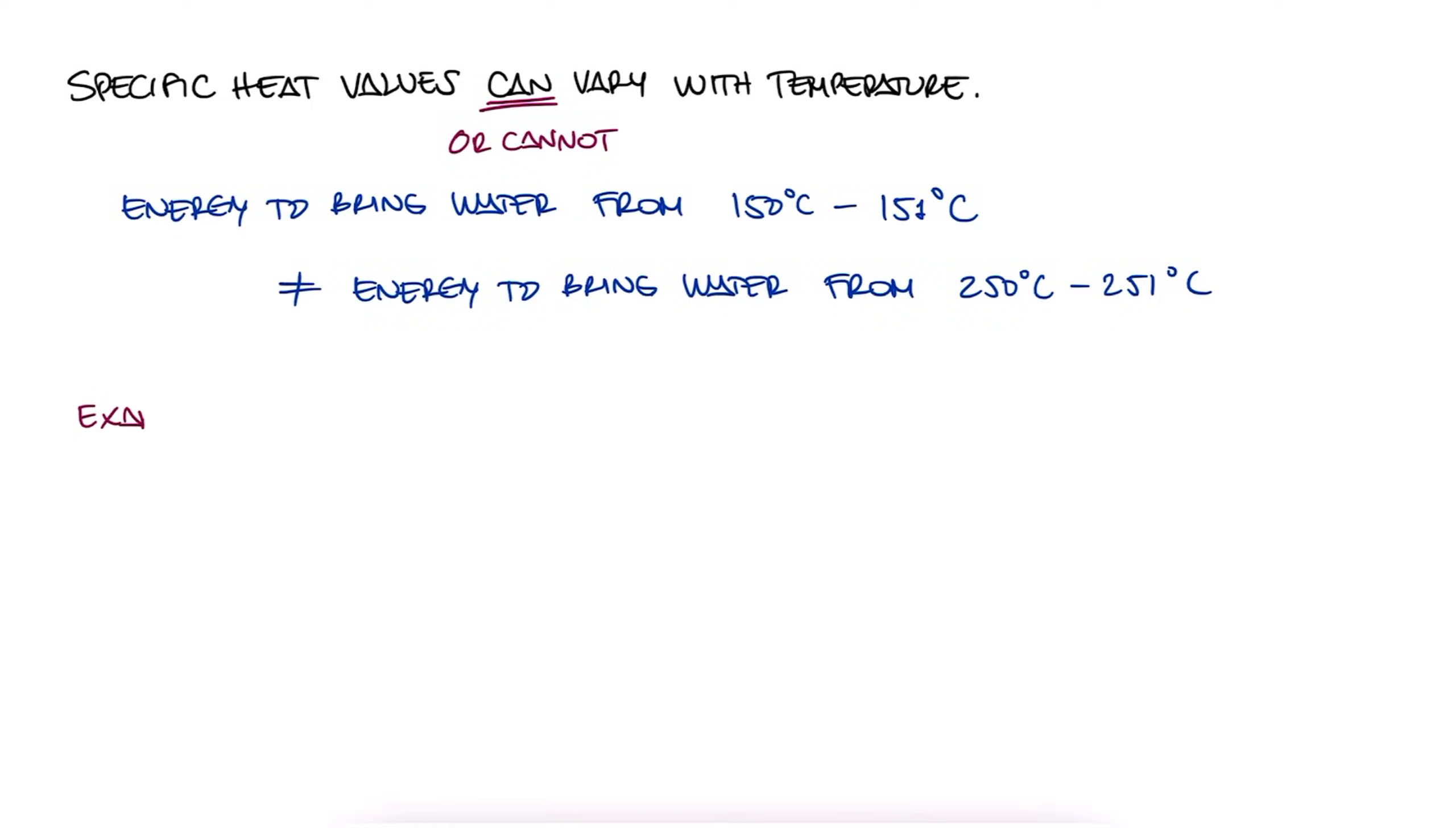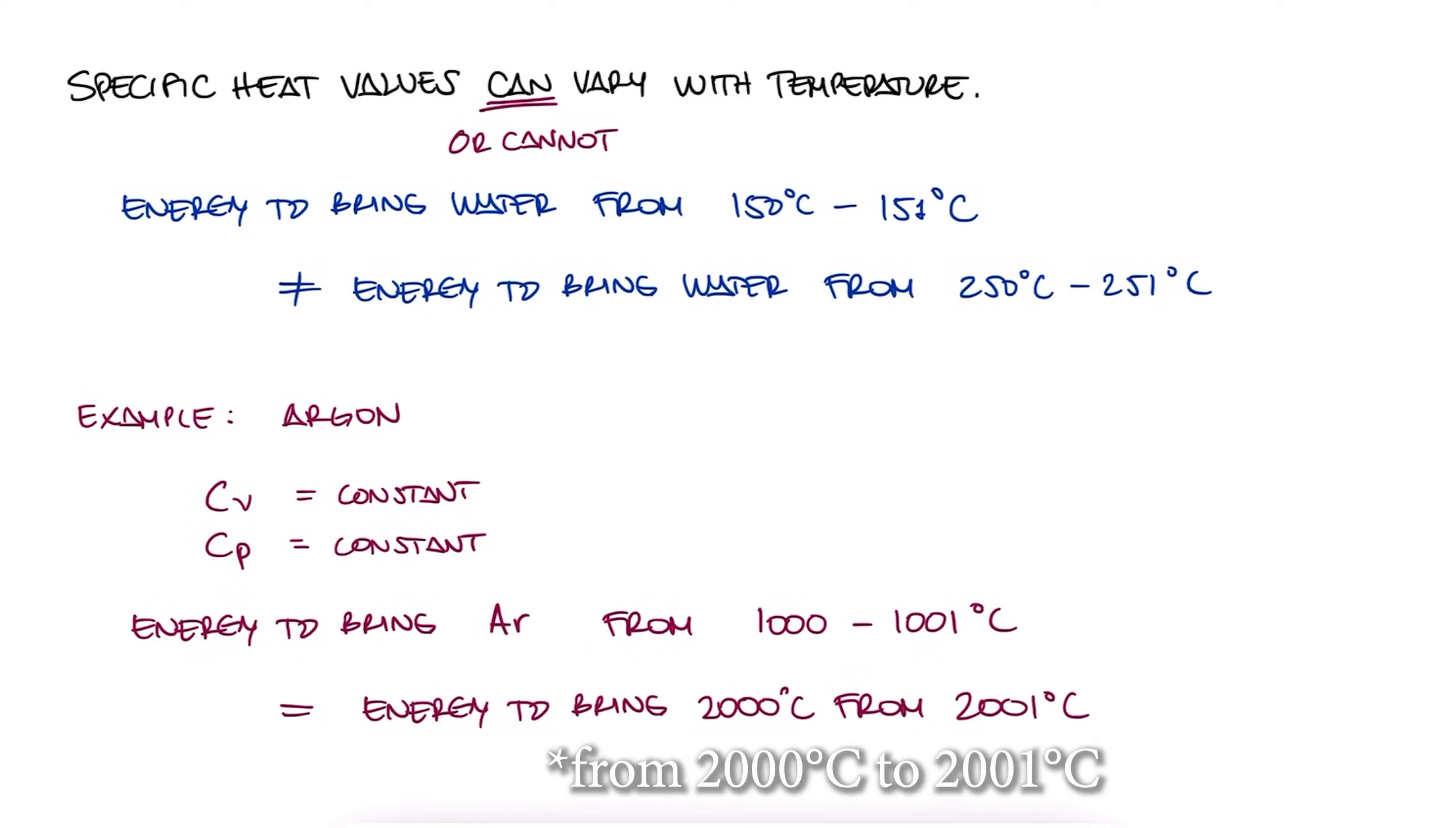For some gases like argon, the two heat capacity values are constant. It doesn't matter if we're bringing argon from 1000 to 1001 Celsius, or from 2000 to 2001 degrees Celsius, or any other 1 degree change. Some of the other common gases that have constant specific heat at constant pressure, like argon, are helium, neon, krypton, xenon, and radon.